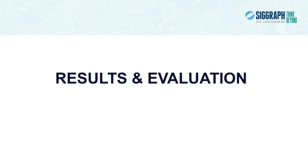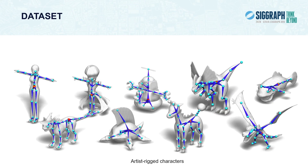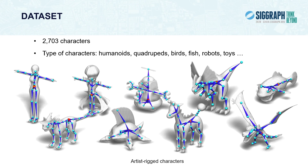Now we show the experiment results and evaluation of our method. To train our method and alternatives, we use the ModelsResource-RigNet dataset of 3D articulated characters, which provides a non-overlapping training and testing split and contains diverse characters. The dataset contains 2,703 rigged characters mined from an online repository, spanning several categories including humanoid, quadrupeds, birds, fish, robots, toys, and other fictional characters.